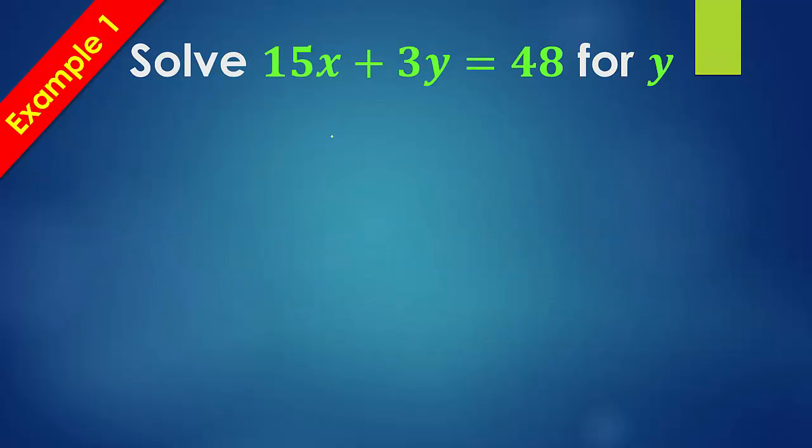So let's start with a nice easy one. I shouldn't say easy, but let's start with one of the more basic ones, and that's 15x plus 3y equals 48. We're solving for y. So we want to get this by itself, which means just like, okay, so forget about, like, let's say we didn't have this here. Solve for y. You're following the same basic steps.